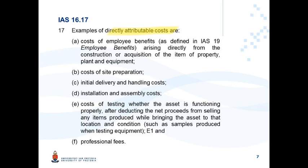The first example is the cost of employee benefits — but not everybody's salary. Only the cost of employee benefits that arises directly from the construction or acquisition of the PPE item is included. The second example is cost of site preparation: if you have an empty field that you want to prepare for building a hotel, and you have to clean it, level it, and chop down trees, the cost of preparing that site is part of the cost price of the building.